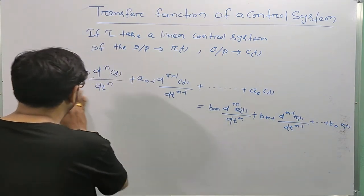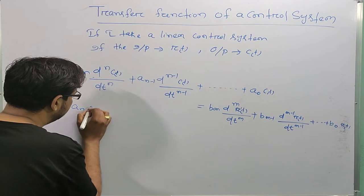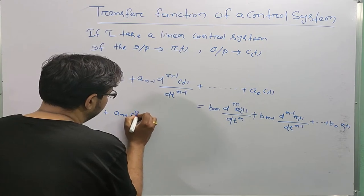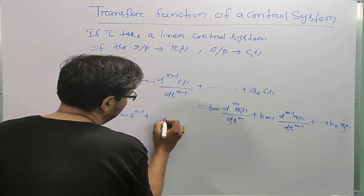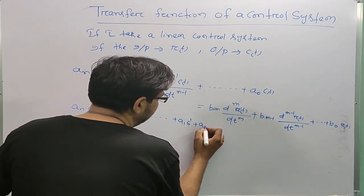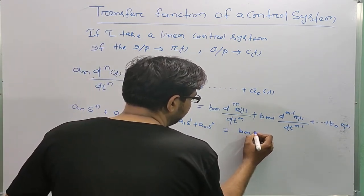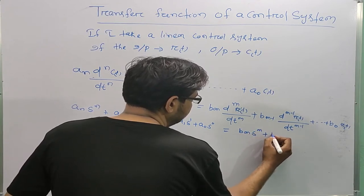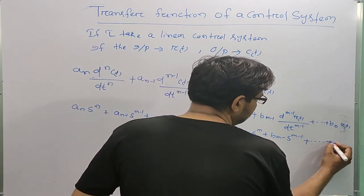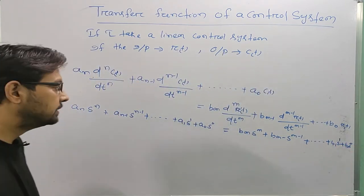If I take the Laplace transform of both sides, then: [a_n s^n + a_(n-1) s^(n-1) + ... + a_1 s + a_0] C(s) = [b_m s^m + b_(m-1) s^(m-1) + ... + b_1 s + b_0] R(s).